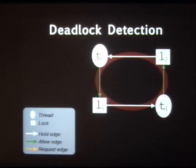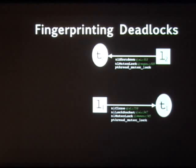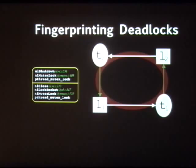Now we've detected the deadlock, but there's really nothing you can do about it at that point — you have to restart the program or micro-reboot or roll it back. But the best you can do is save some information about what happened to avoid this deadlock next time. DEMUNIX captures as labels on what we call the hold edges the call stack each thread had at the time it acquired the lock. When T1 acquired L1, it had a call stack originating at nlclose. When T2 acquired L2, it had its call stack. DEMUNIX detects the cycle, walks around it, collects these labels, and forms a signature.